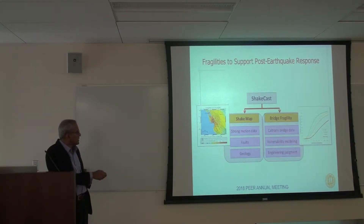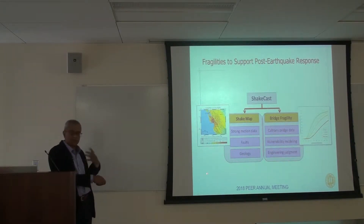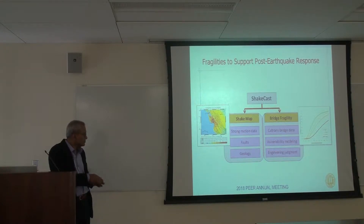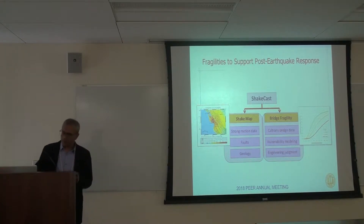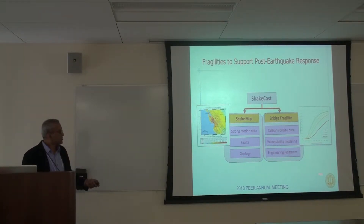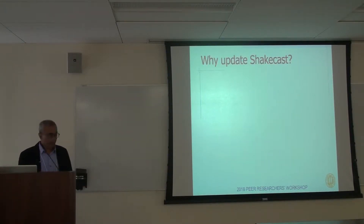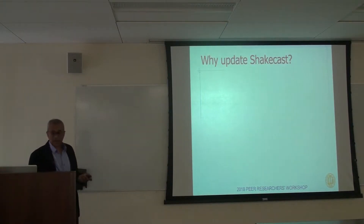ShakeCast is composed of two parts: there's the ShakeMap part, which gives you the ground motion data, and then of course the bridge fragilities themselves. It's a question of putting the two together, and what we are focusing on is one small piece of this — the bridge fragility portion.